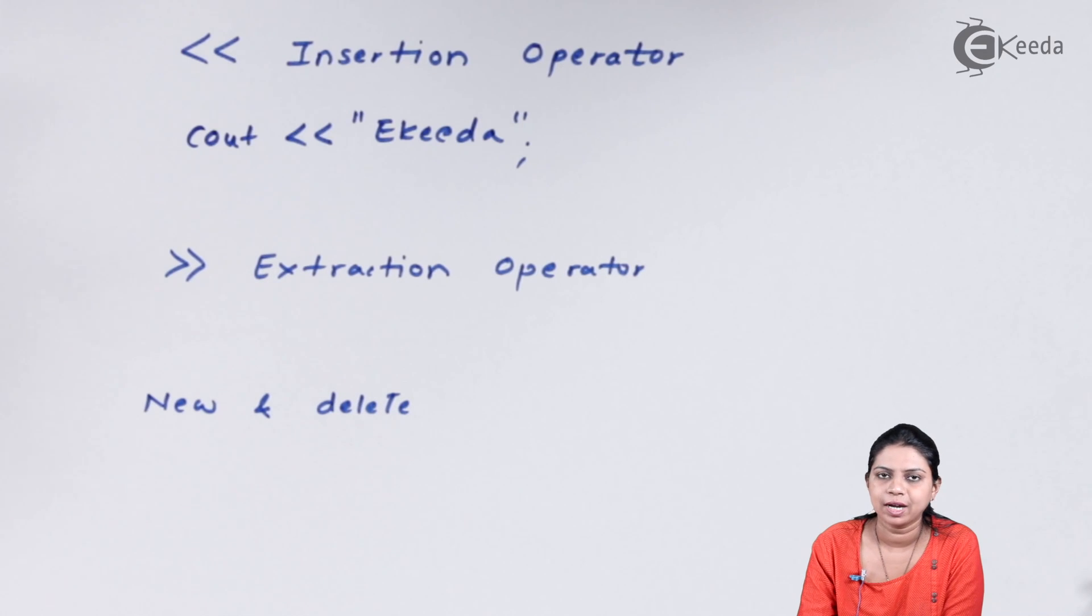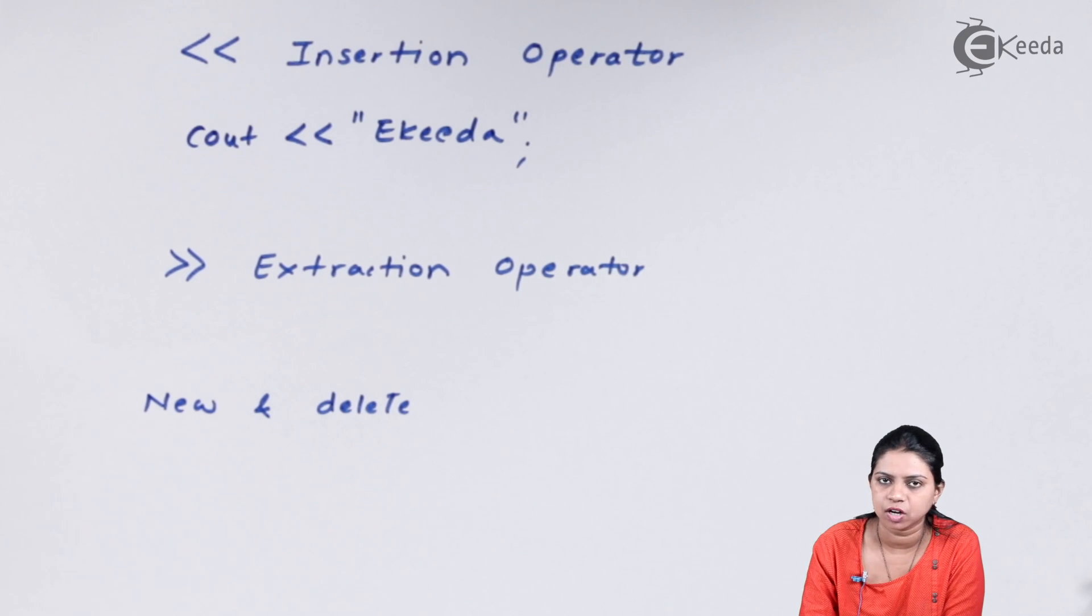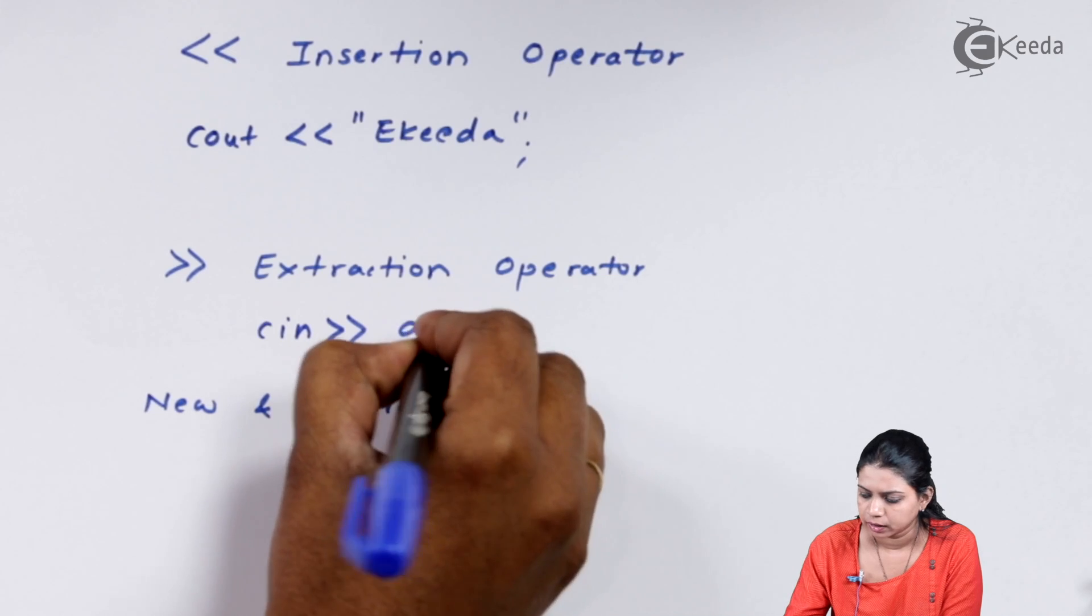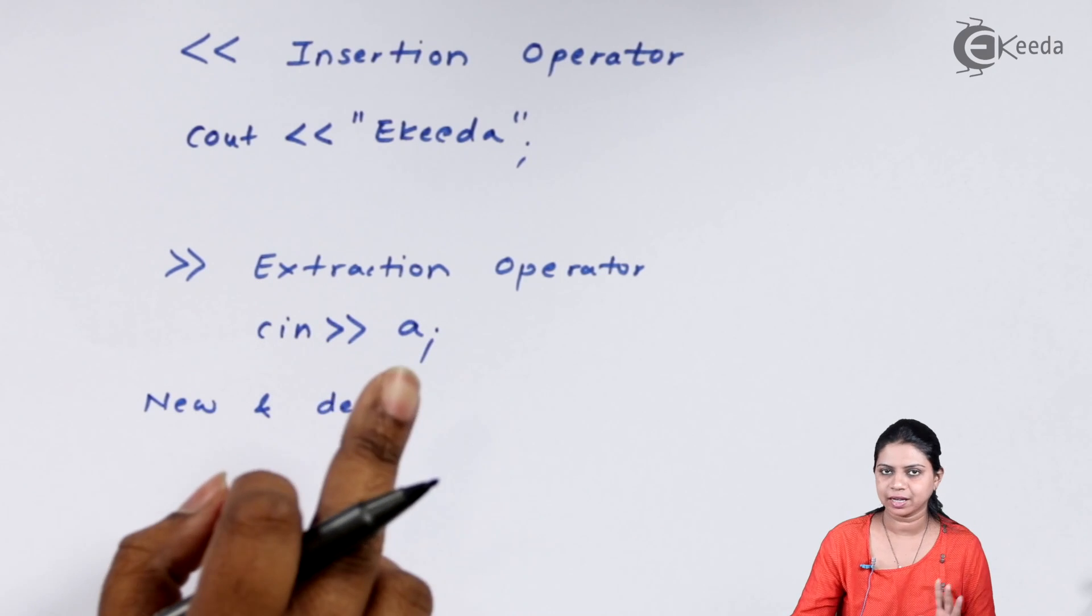The next operator is called the extraction operator. The extraction operator is always used along with the cin function. What is the cin function? We will study that, but as of now, just take an example.